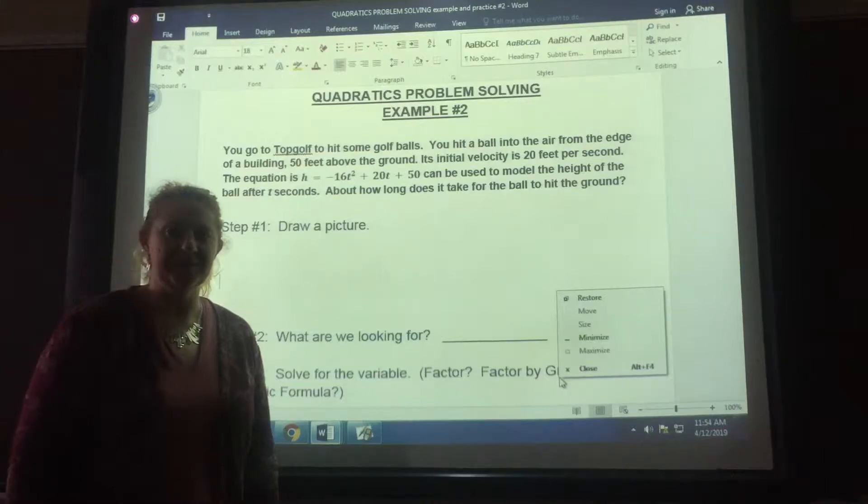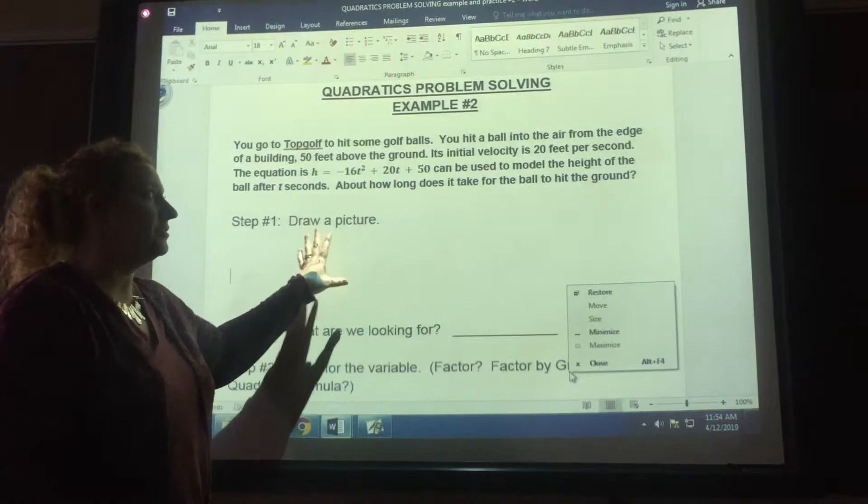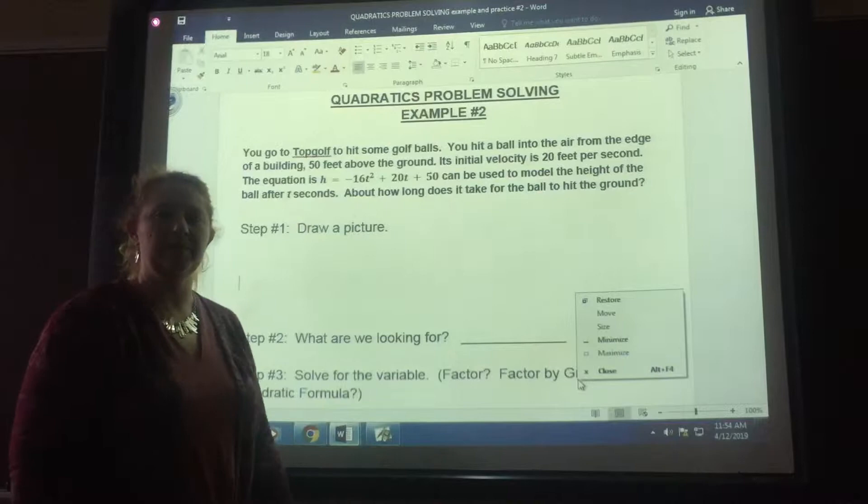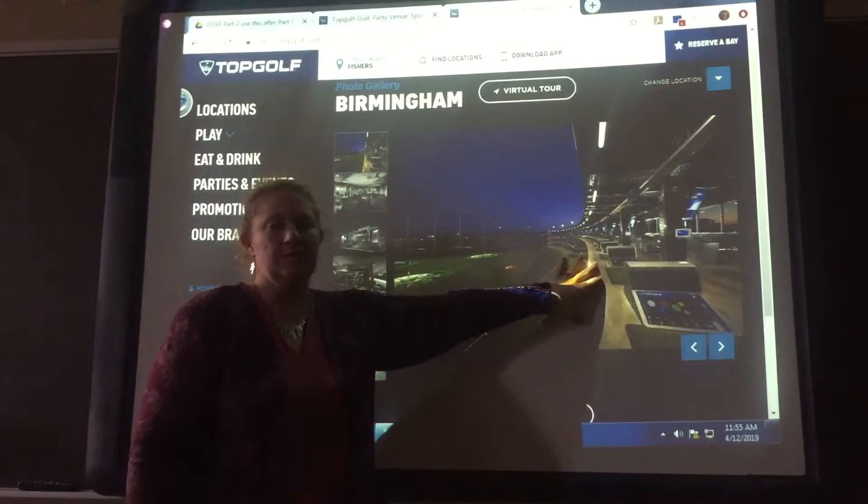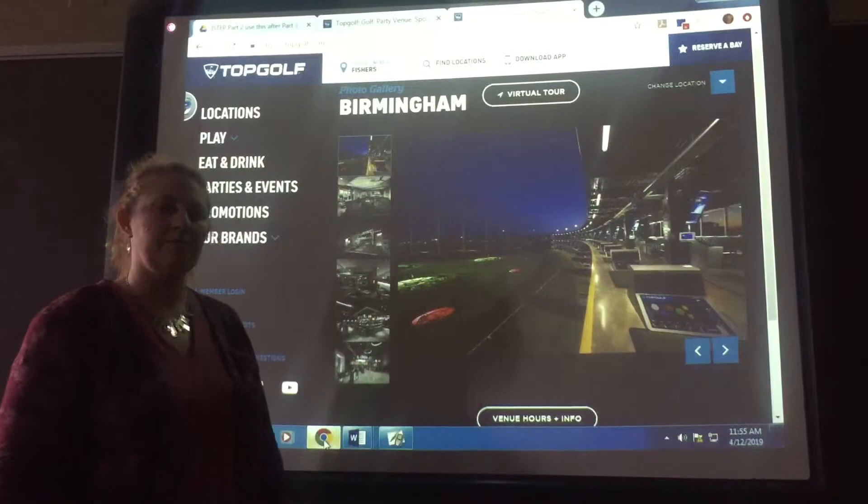On Friday, we learned about quadratic solving applications, and today we're going to finish up example two. We actually started this example on Friday. We watched that video about Topgolf, and let me just remind you that Topgolf is a building where there are several different levels of lanes where you can play golf, or drive golf balls off the edge. This is just a picture of what Topgolf looks like, and let's go back to our example.